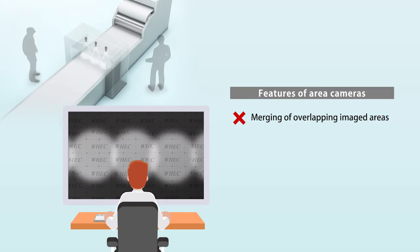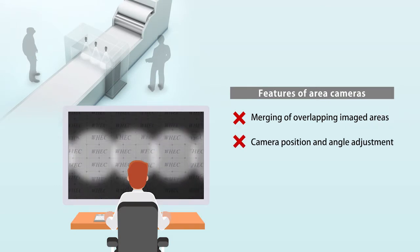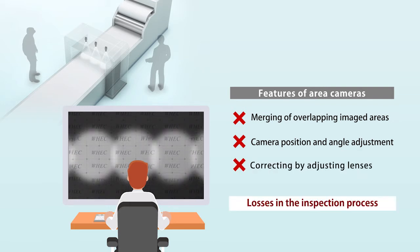With area cameras, it is difficult to merge overlapping imaged areas, to adjust the positions and angles of cameras, and to perform corrections by adjusting lenses. This results in inspection process loss.